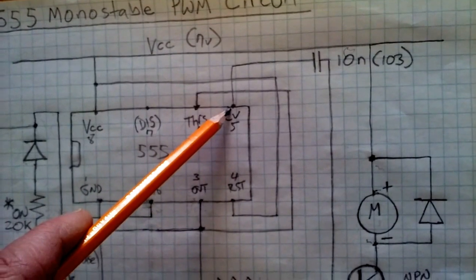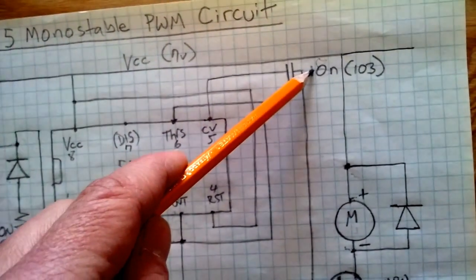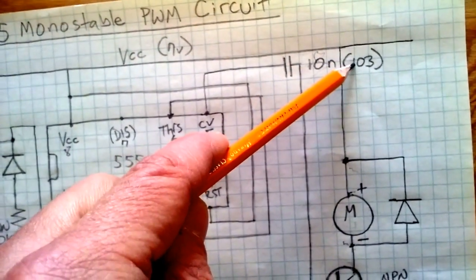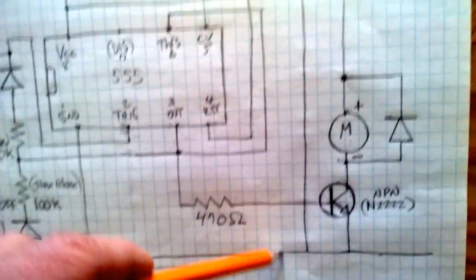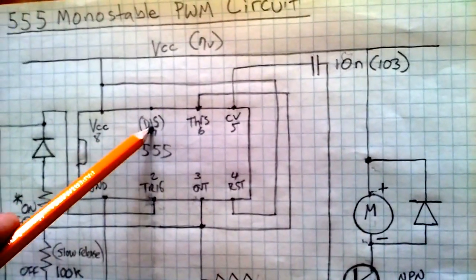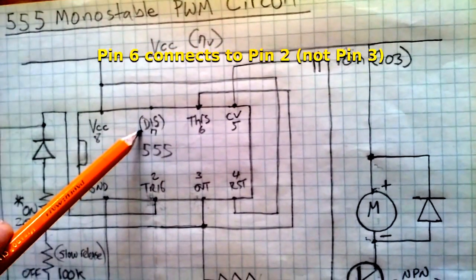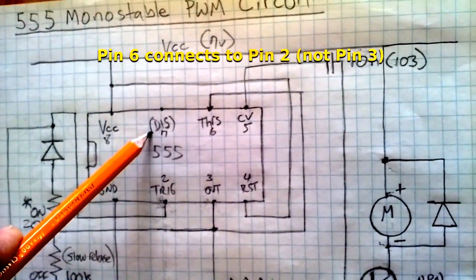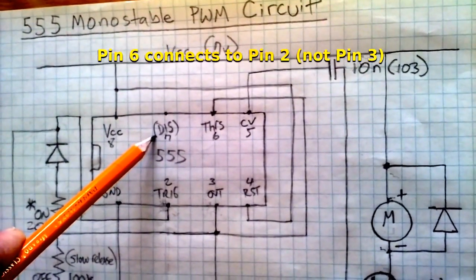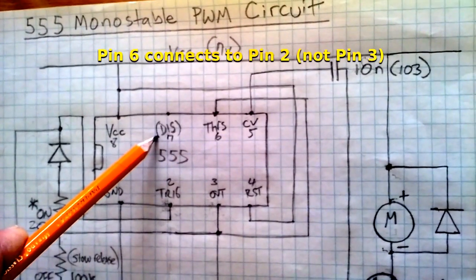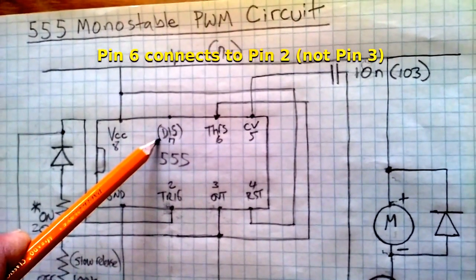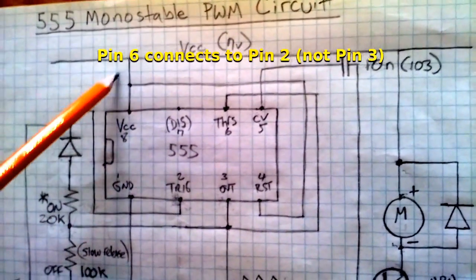On the control pin, pin 5, we've got a 10 nanofarad—that's the 103 capacitor—going to ground. We're not using the discharge pin. Apparently with a 555, you can use the discharge pin with a monostable circuit if you need to bring the voltage to ground really fast, which we don't for this circuit. Pin 8 goes to voltage in as well.